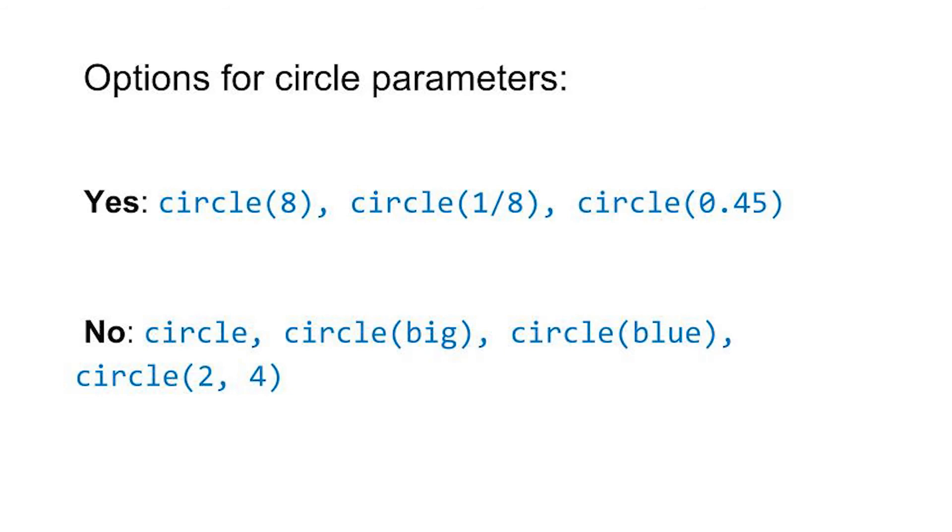Some options for circle parameters are 8. You could do 1/8. You can do fractions to make a tiny circle. You can do decimals. Make sure you have a 0 in the ones place. So 0.45. If you just put .45, it won't work. What you cannot do is just write circle because the computer doesn't know how big to make it. Or circle big. It's not specific enough. Or circle blue. I'll teach you how to do colors later. And if you have two parameters, 2 and 4, like you do for rectangle, you're going to get an error message. There's only one parameter, which is the radius.